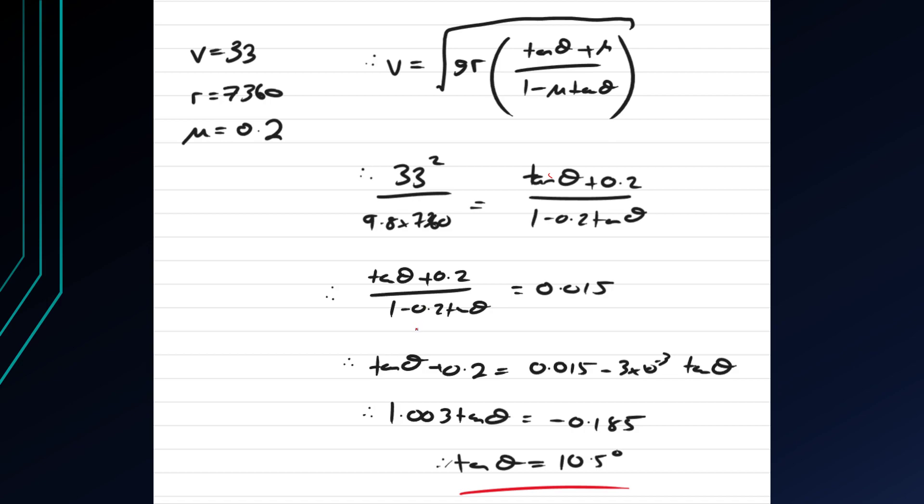So if we multiply by this entire bottom thing and expand everything out we get tan theta plus 0.2 equals 0.015, so that's the 0.015 times the 1 minus 0.2 tan theta.